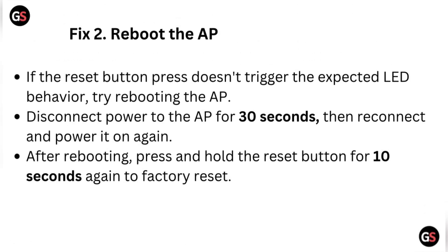Fix two: Reboot the AP. After the reset button press doesn't trigger the expected LED behavior, try rebooting the AP. Disconnect power to the AP for 30 seconds, then reconnect and power it on again. After rebooting, press and hold the reset button for 10 seconds again to factory reset.